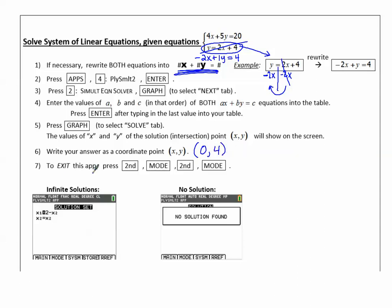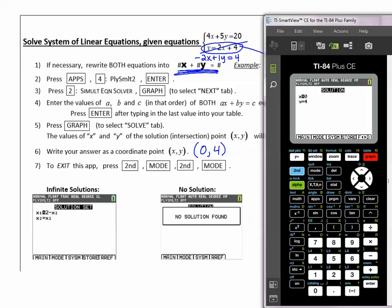To exit the app to do something else with our calculator, we'll press second mode, second mode. That quits out of the app. See the quit? Second mode, second mode. It quits out of the app.